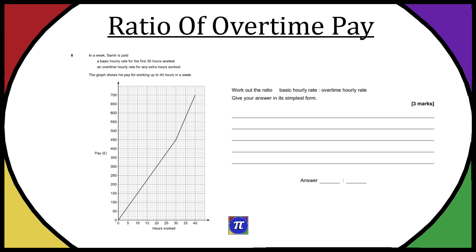In a week, Samir is paid a basic hourly rate for the first 30 hours of work — you can see that's that first line there before it kinks. So there are effectively two lines: the first line and then the slightly steeper one.